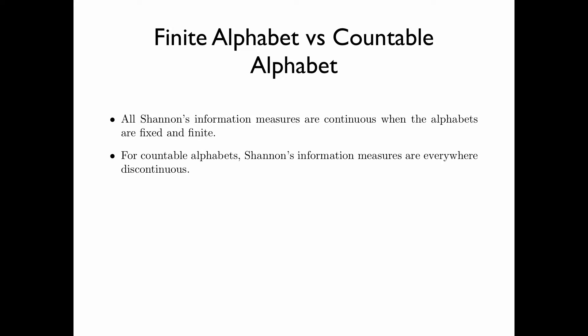For countable alphabets, namely that the alphabet contains a countably infinite number of elements, Shannon's information measures turn out to be everywhere discontinuous, which is rather surprising.